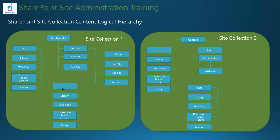Sub-sites can also have their own child sites, so you can see how content creation is streamlined and how content gets organized through container hierarchy. Site collection two demonstrates this with a naming example — a demo site called Contoso with lists, libraries, and web pages at the root, plus a sub-site for blogs such as a financial blog, marketing blog, or communication blog.